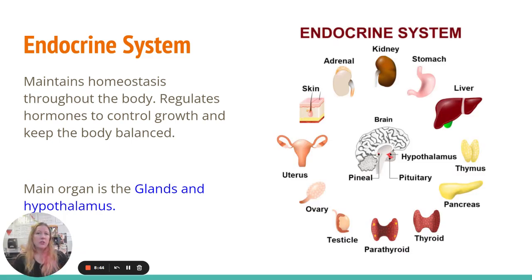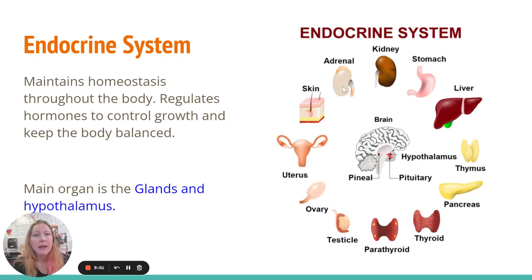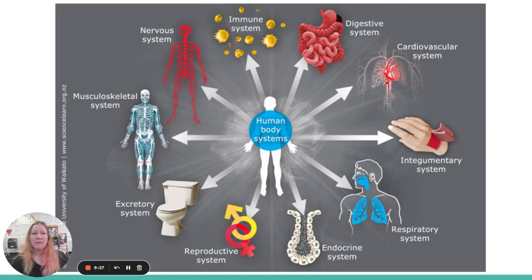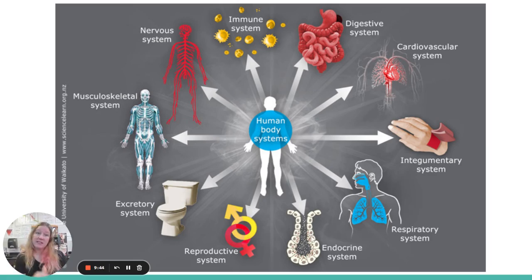The endocrine system is huge and probably the hardest to explain because it does everything. It maintains the homeostasis of your body. When the brain tells you you're hungry, it actually happens through a releasing of hormones. All of these things in your body are regulated by hormones from the endocrine system, which tries to maintain a balance for your body. Your digestive system will tell you when you're hungry through the nervous system, and the circulatory and integumentary systems help distribute hormones throughout the body. Here are the big interactions of the human body system. We didn't go into the immune system in depth, though we did talk about white blood cells. The endocrine system also affects some of the growth differences between boys and girls.